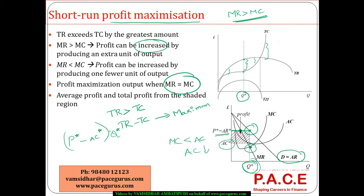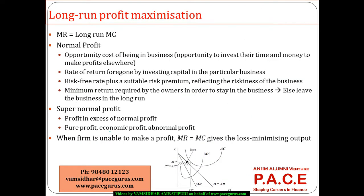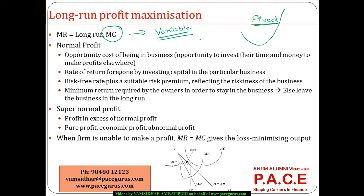This covers short-term profit. In the long run, the marginal cost is different because in the short run some costs are fixed, so the MC curve comes down and then goes up. In the long run, every cost is variable — there is nothing called a fixed cost. So the marginal cost curve differs, and for long-run profit maximization I find where the marginal revenue curve equals the long-run marginal cost curve.